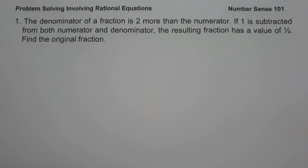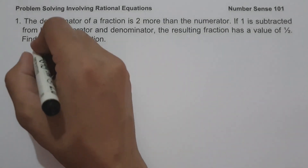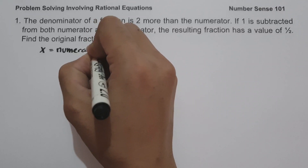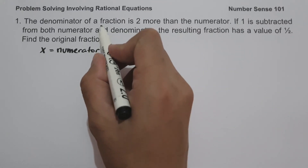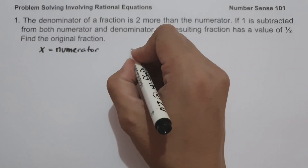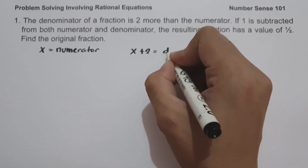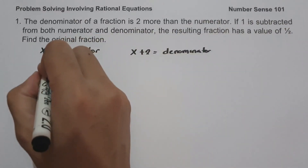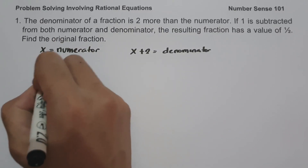On the first example, the denominator of a fraction is two more than the numerator. If one is subtracted from both numerator and denominator, the resulting fraction has a value of one-half. Find the original fraction. To determine the original fraction, let us represent x as our numerator. Since the denominator is two more than the numerator, let us have x plus two as our denominator, giving us the fraction x over x plus two.